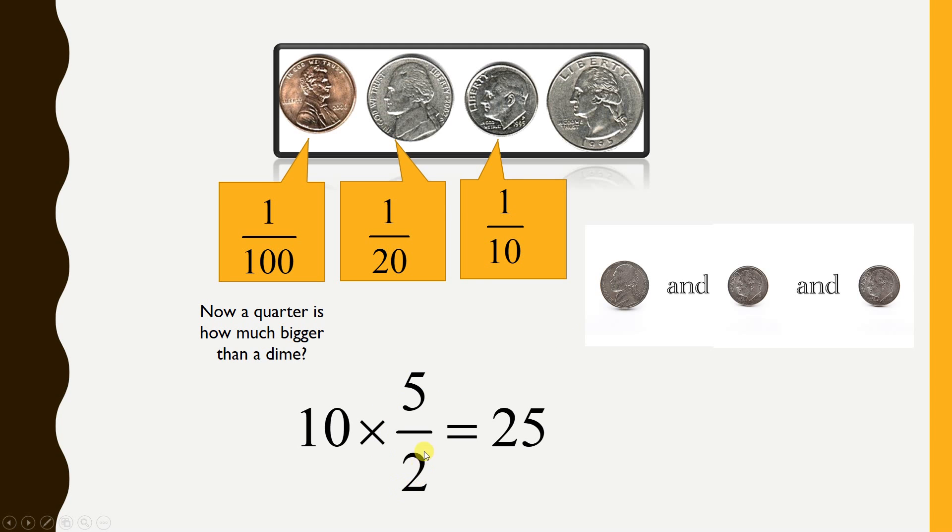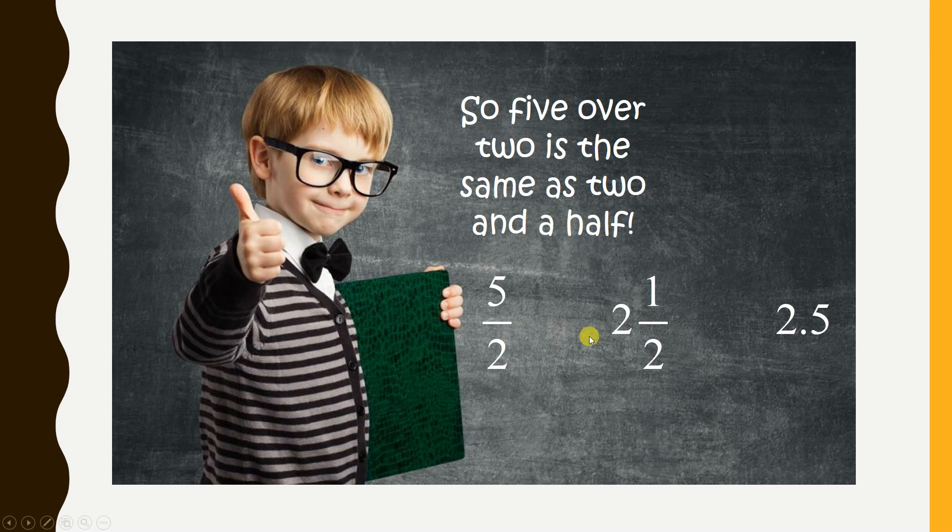And, we could write that as an improper fraction like this. But, they're all the same. As a decimal, point five is five tenths. And, that's a half. And, two and a half and five over two. These are all the same thing. And, you've got to be comfortable switching between one and the other. Sometimes, this makes great sense. Sometimes, this makes more sense. And, sometimes, this is best. It really depends on the application. So, you have to be fluent going back and forth between the three.